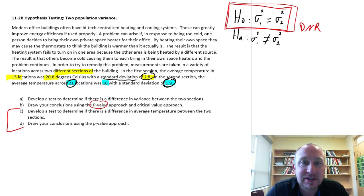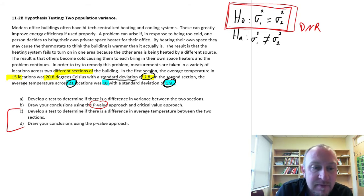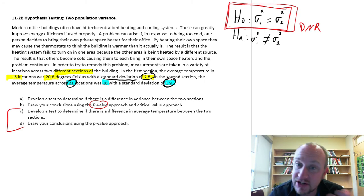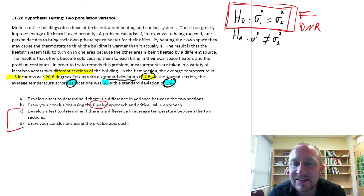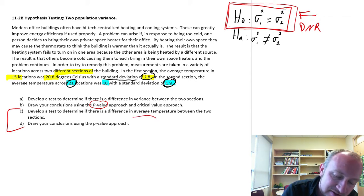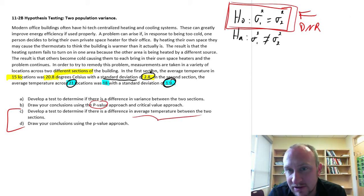Okay, welcome back. We're just going to finish up this problem looking at differences in temperature between two sections of this building. We've already done parts A and B where we performed this test on the variance, and we found that we had insufficient evidence to reject our null hypothesis, saying that as far as the variance goes I can't say that there's any difference between these two sections of the building. So now what we're going to do is test to see if there's a difference in the average temperature between these two.